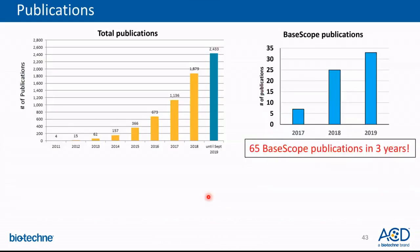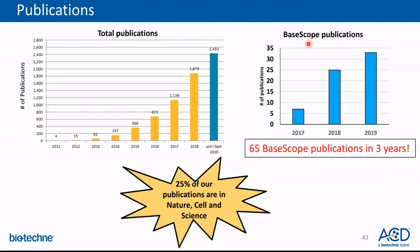Publications are a significant piece of scientific material that researchers leverage for understanding current trends. ACD has over 2,400 publications as of today and over 500 publications just this year. Within those, BASCOPE has over 65 publications in just 3 years. As a fun fact, an average of 25% of our publications are published in Nature, Cell, and Science — the top 3 scientific journals. Use BASCOPE to help you publish.